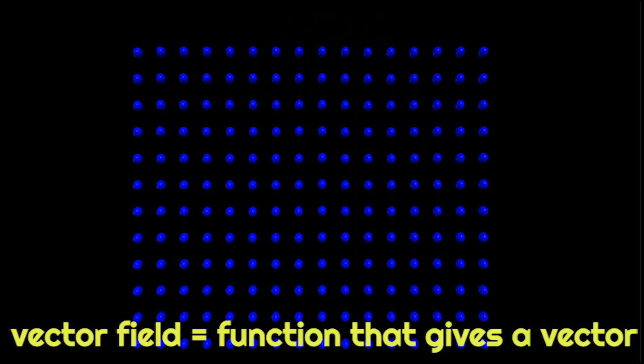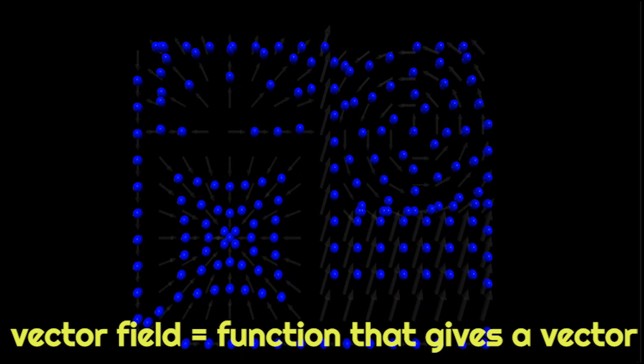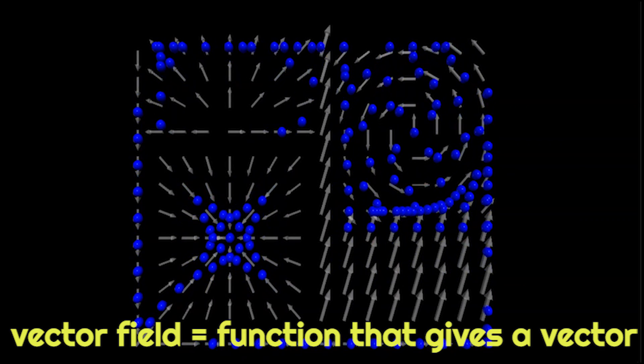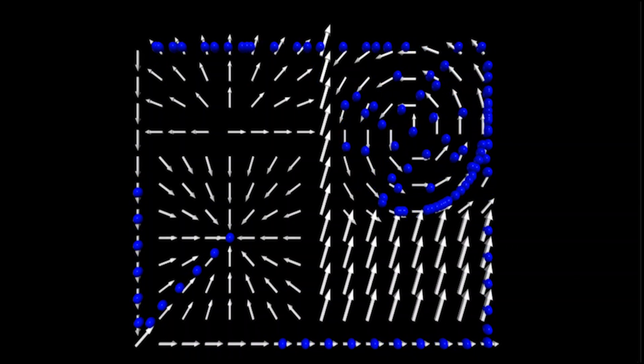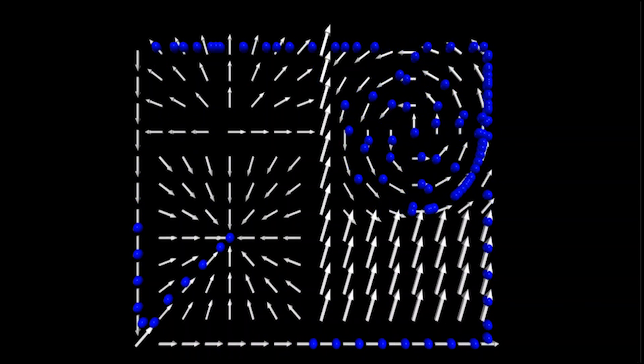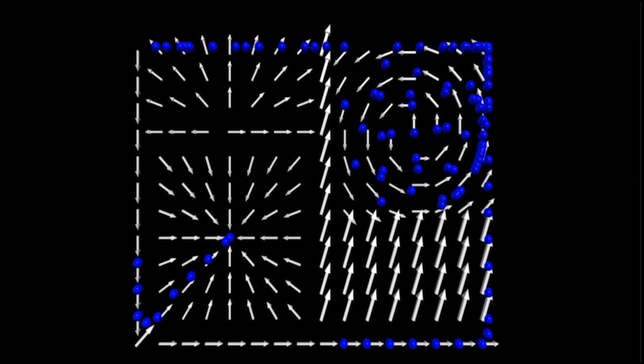A vector field is also a function where the input is a point in space but the output is a vector. A prime example of a vector field is water flowing around in a pond. Each water molecule has its own velocity vector which creates a vector field over the whole pond.